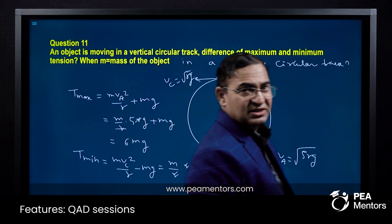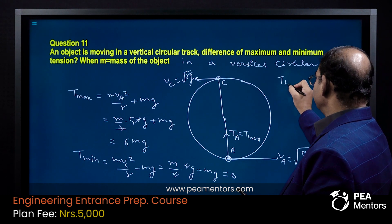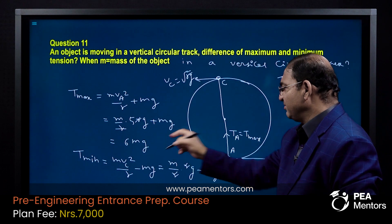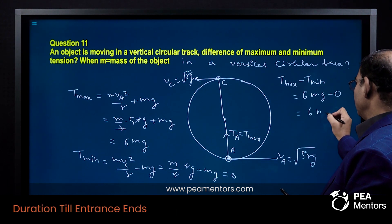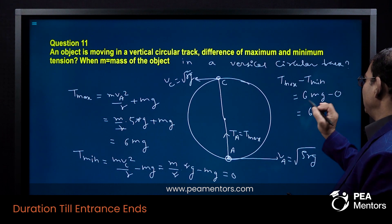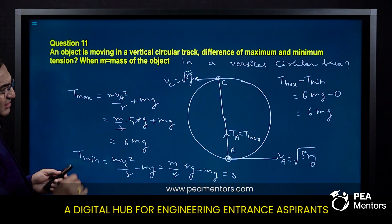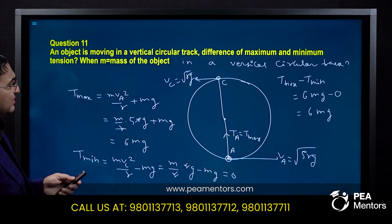So tension difference, maximum tension and minimum tension. The difference of T maximum and T minimum equals 6MG minus 0. Therefore, the difference of tension maximum and minimum is equal to 6MG. This is the answer.